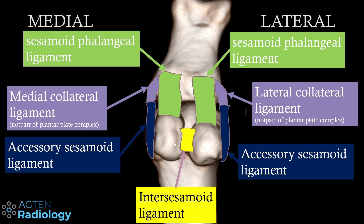Let's start with the intersesamoid ligament. It's basically just connecting the two sesamoid bones — very easy to see, especially on short axis views, which we will see later. This is one part that can get injured, though it's not frequently the case.